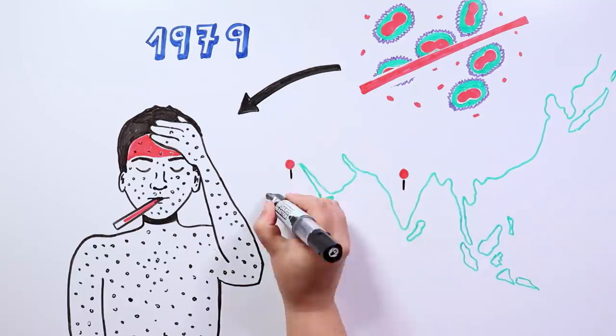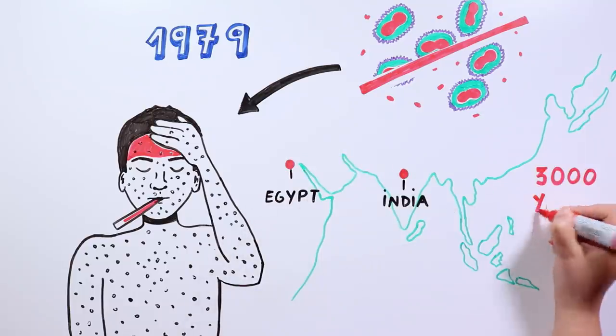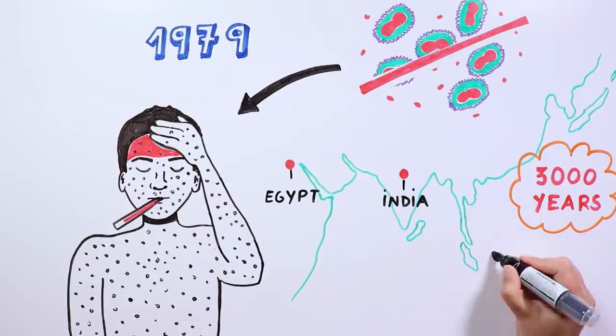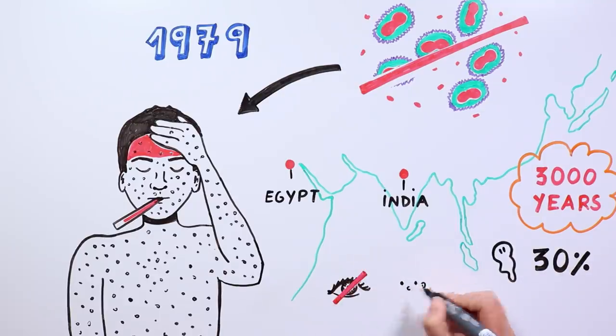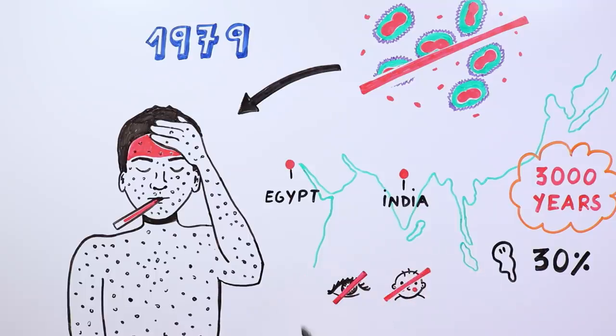They say it appeared in India or Egypt 3000 years ago, and killed 30% of people infected. Survivors often had severe sequelae, such as blindness or infertility.